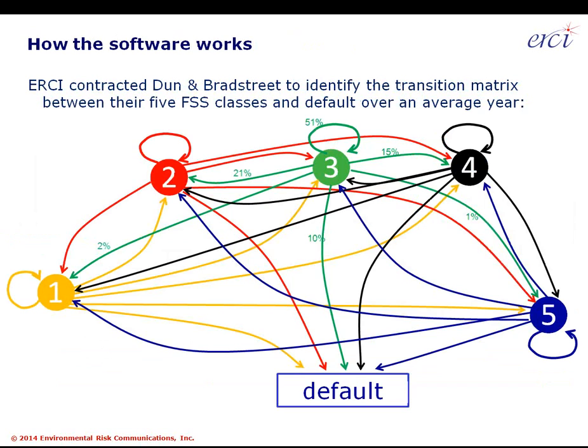Taking that financial stress score class data, we built a Markov chain Monte Carlo model around it. The basic idea of a Markov chain is a transition matrix showing flows of companies from one financial stress score class to another. For example, a company in class three has a 21% probability of moving to class two in 12 months — getting stronger. Over time these probabilities compound into an interesting range of outcomes.